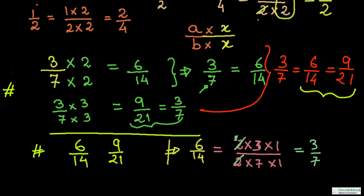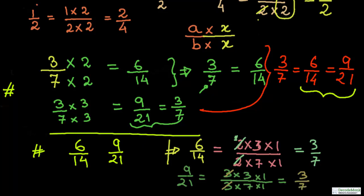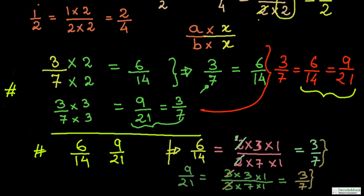Next, take the second fraction: 9 upon 21. Breaking into factors, 9 is 3 multiplied by 3, and 21 is 3 multiplied by 7. The common factor 3 cancels out, leaving 3 upon 7. So 9 upon 21 is also equal to 3 upon 7. Since both fractions reduce to the same lowest fraction — 3 upon 7 — we conclude that 6 upon 14 equals 9 upon 21, and therefore they are equivalent fractions.